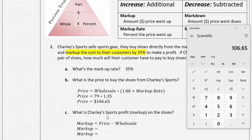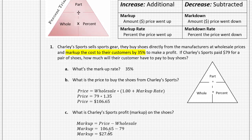Now, what is Charlie Sports' profit — in other words, what is the actual markup in dollars? We know the markup rate is 35%, but what is that dollar amount? Since we've already done some calculations, we can take the price the customers pay and subtract the wholesale price that Charlie Sports paid. Taking $106.65 minus $79, Charlie Sports is marking up those shoes by $27.65 — that would be their profit on that pair of shoes.